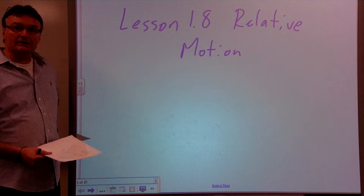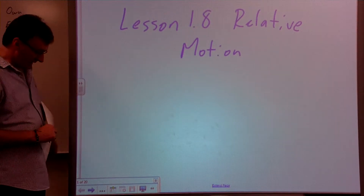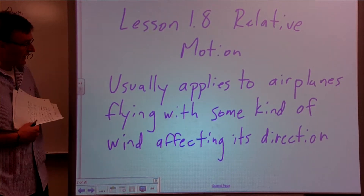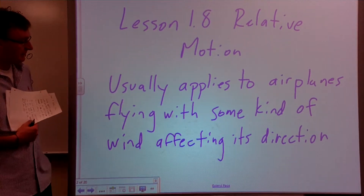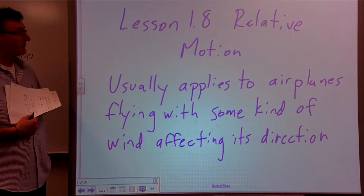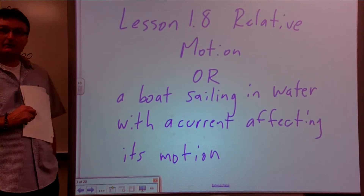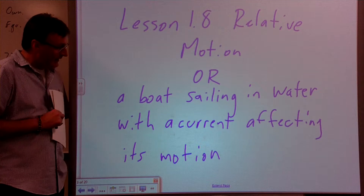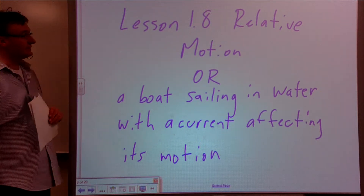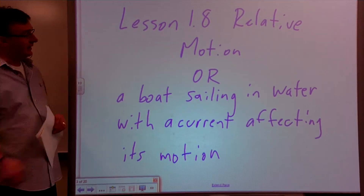Welcome to another exciting edition of Physics 12. This is lesson 1.8 and we're talking today about relative motion. Relative motion applies to the kinds of problems we're going to see, which deal with airplanes flying with some kind of wind affecting their direction of travel, and another example would be sailing in water that has a current, which is again affecting its motion.